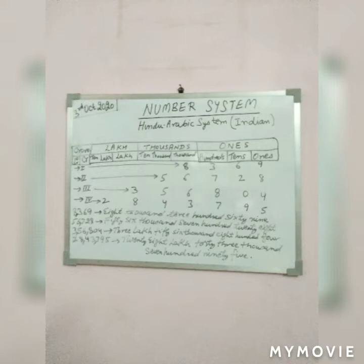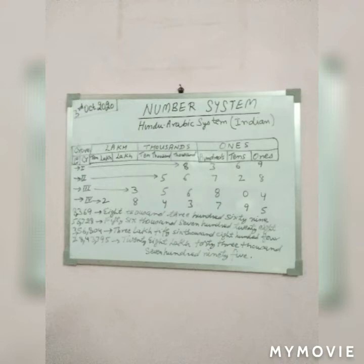So this was the Indian number system, commonly known as the Hindu-Arabic system. One more thing to specify: the largest 7-digit number means all 9s. And if we say the smallest 4-digit number, then it is 1 followed by zeros. Same way, if they say the largest 8-digit number, write all 9s. If they say the smallest 8-digit number, then it is 1 followed by seven 0s.